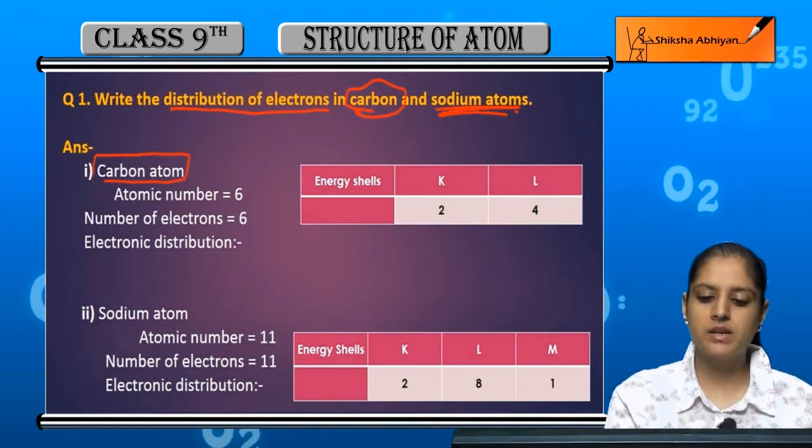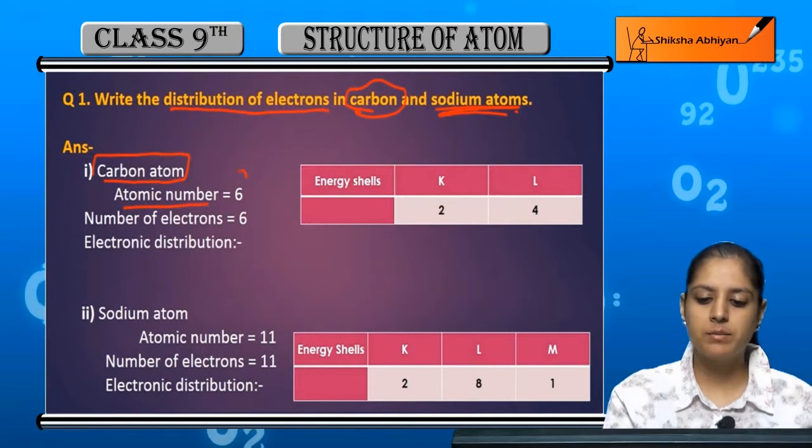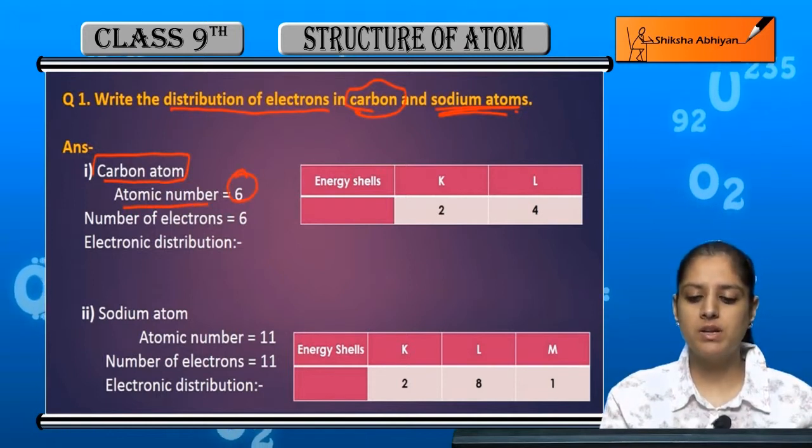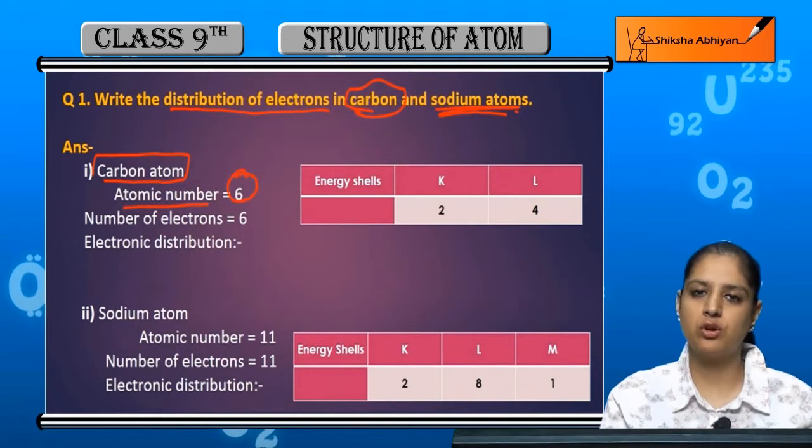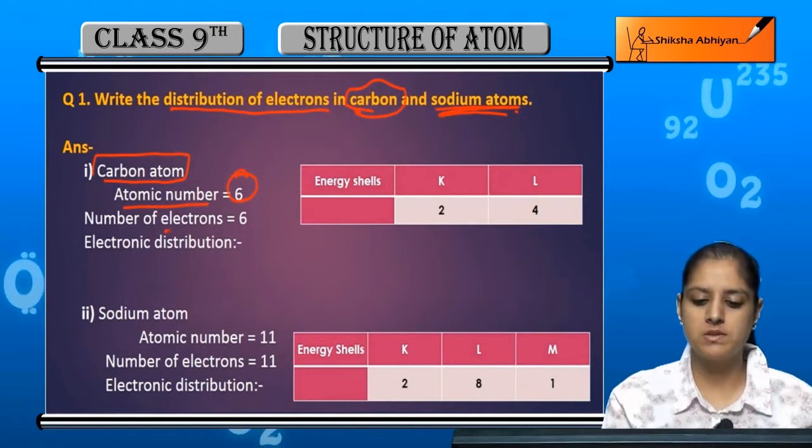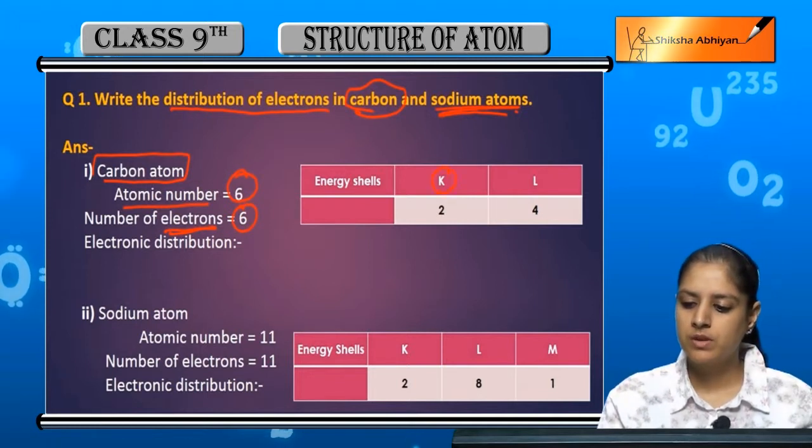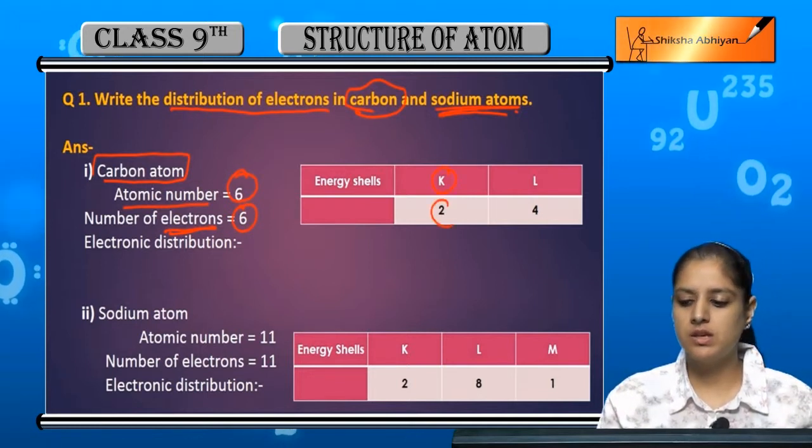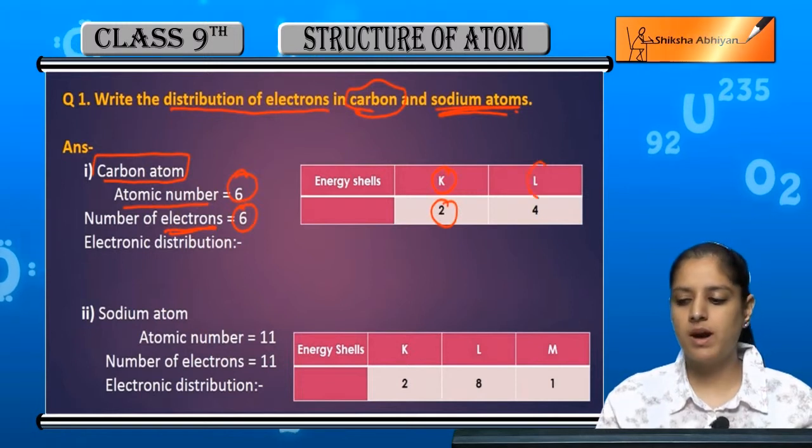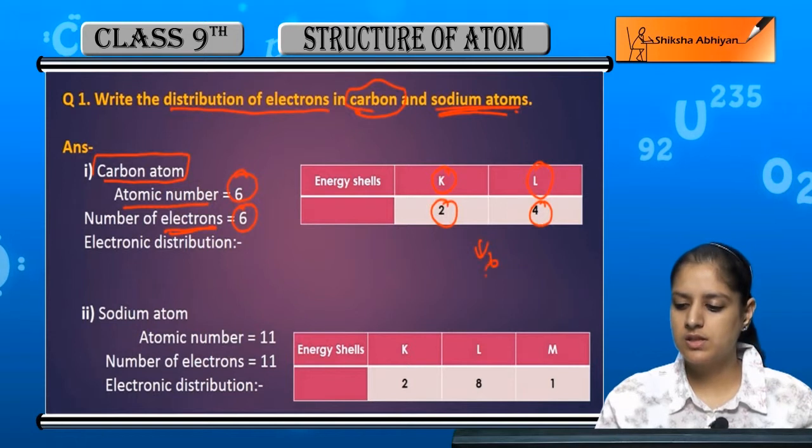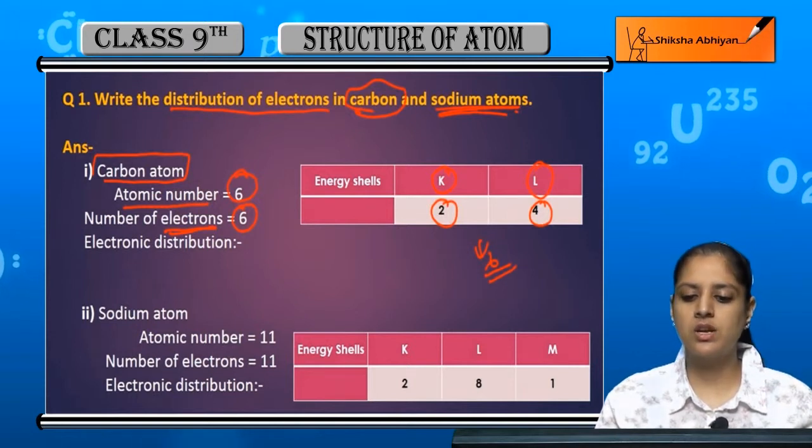So if we are talking about carbon atom, carbon atomic number is 6. So atomic number 6 means number of protons is 6 and number of electrons is 6. So if we are looking at the first shell, in K shell is 2 and then L shell is 4. So 2 plus 4 is 6. So this is the electronic distribution of carbon.